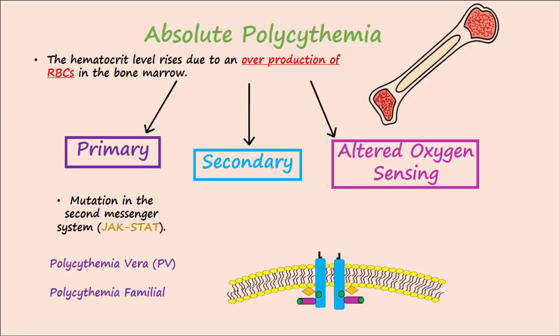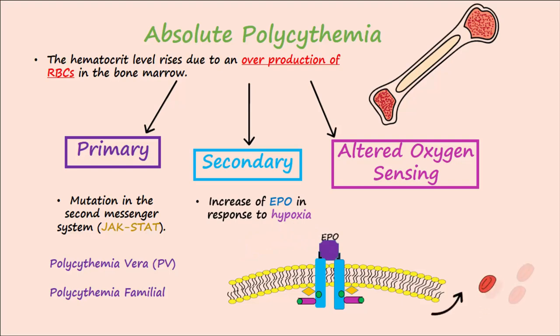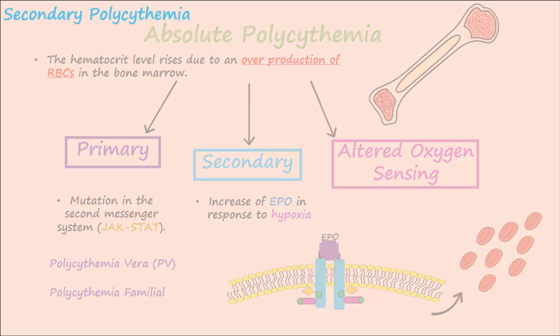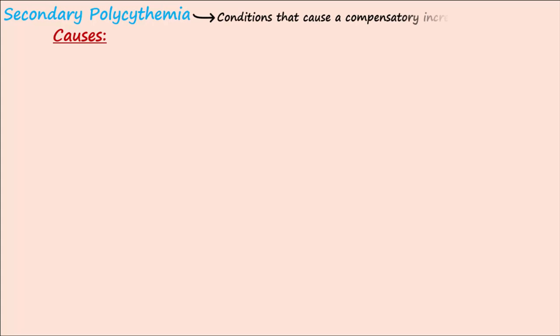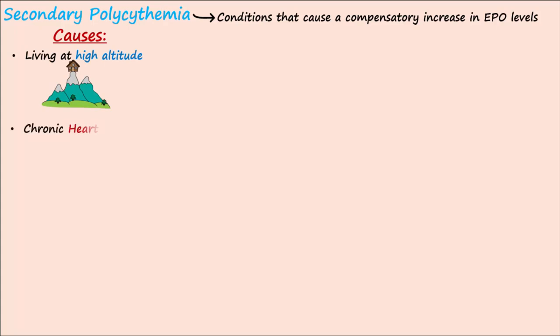Secondary polycythemia is a type of absolute polycythemia that leads to elevated red cells due to an increase in EPO because of hypoxia, or low oxygen levels in the tissues. There are several causes that may lead to a compensatory increase in EPO production. Some of these causes include living at high altitude, where there are lower levels of ambient oxygen, and chronic heart disease like heart failure, where blood isn't adequately pumped.